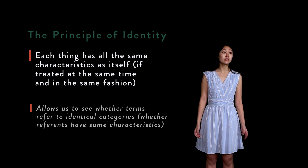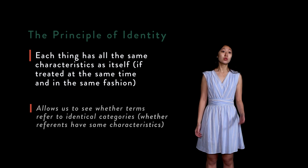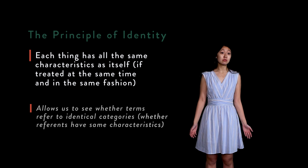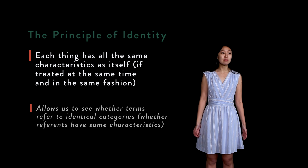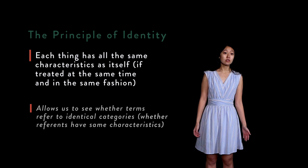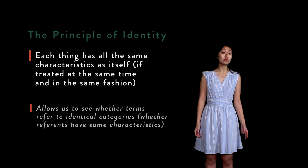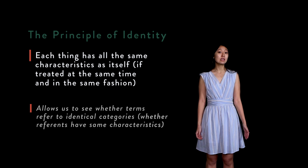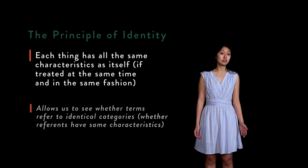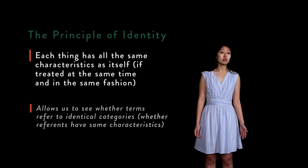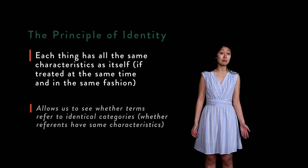Why is this principle so crucial to logic? To start, it allows us to determine when two terms refer to equivalent categories — by this we mean when the reference of the terms, the objects or categories which a term picks out, have all the same characteristics. In addition, the identity principle allows us to determine when two terms are not equivalent, i.e., when the reference of the terms do not all have the same characteristics.